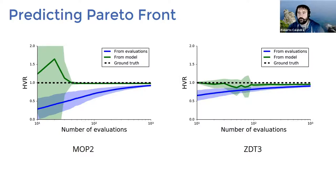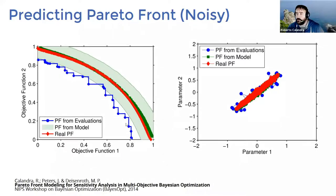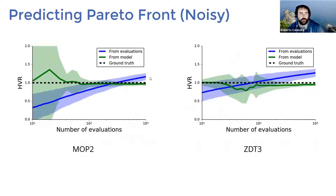On benchmark functions like MOP2 and ZDT3, estimating the Pareto front from the model was several orders of magnitude faster and more accurate than using only the data. This also allows denser, more accurate Pareto fronts, giving the end user more choice. Another advantage of modeling the Pareto front is resilience to noise — stochastic functions can cause traditional estimation to overestimate performance due to lucky runs, while model-based estimation can account for noise and predict the real Pareto front along with its distribution.